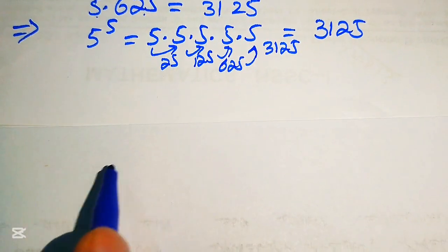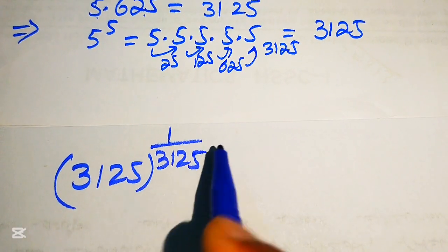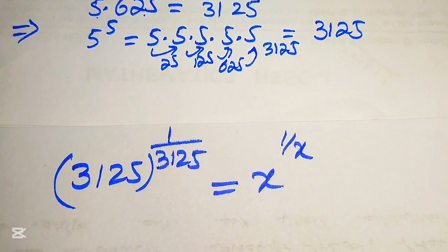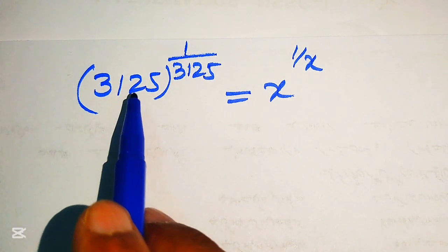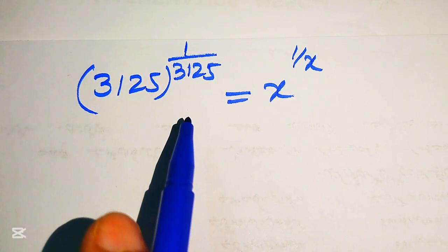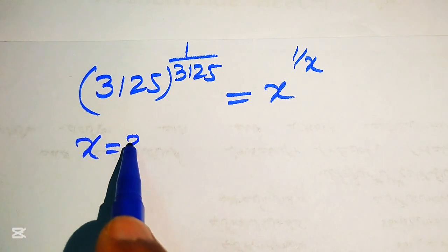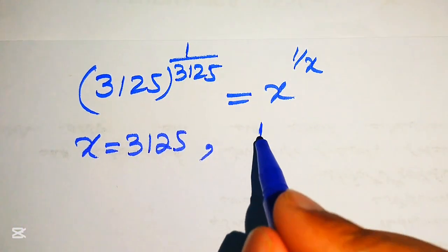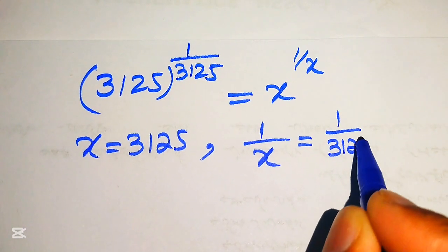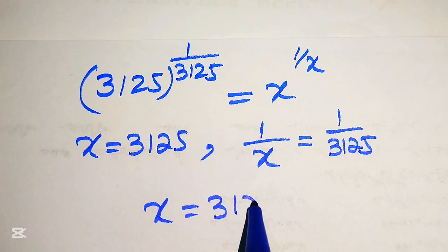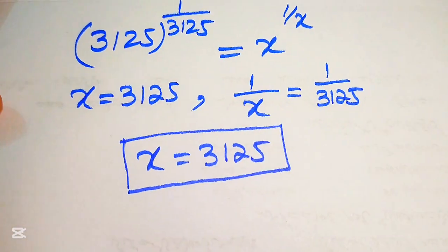Substituting these values, we get 5 to the power of 5 equals 3125 to the power of 1/3125, equals x to the power of 1/x. Comparing both sides — the base gives x equals 3125, and comparing exponents gives 1/x equals 1/3125. From both cases, the final value of x is 3125.